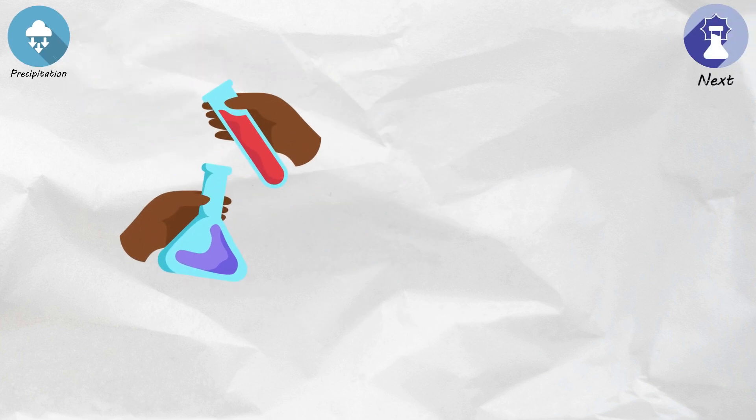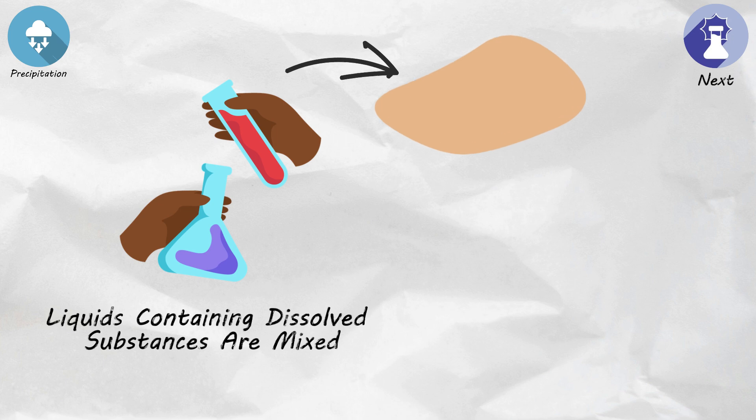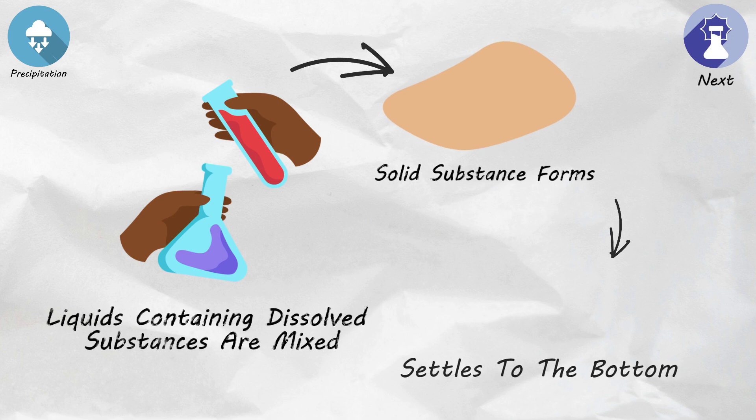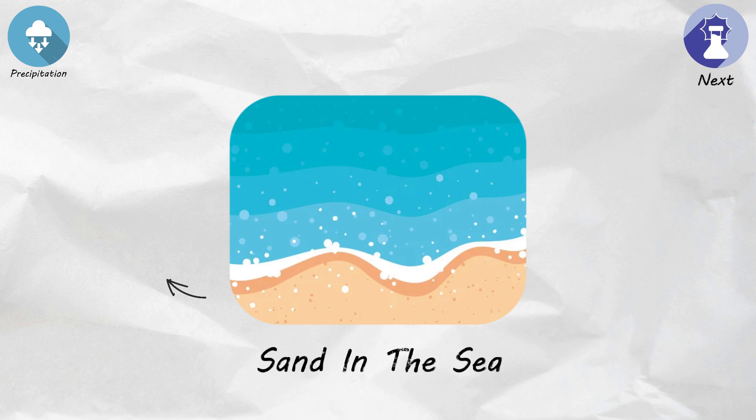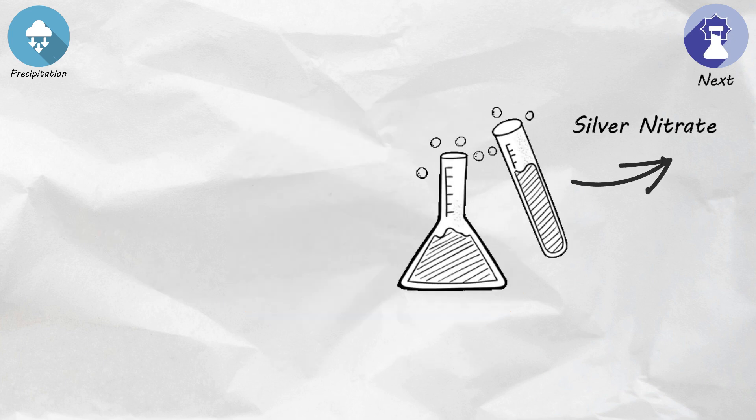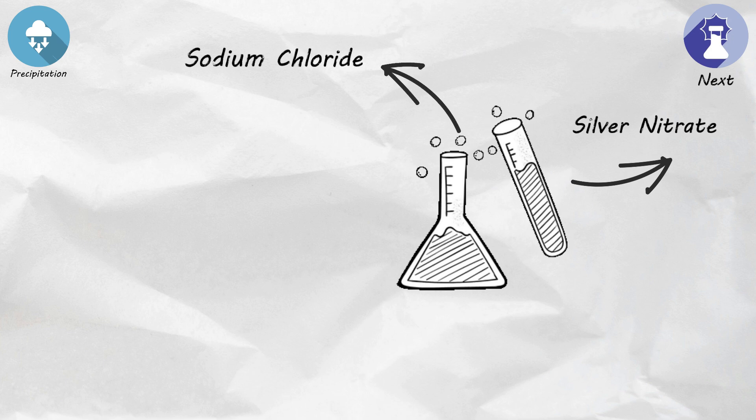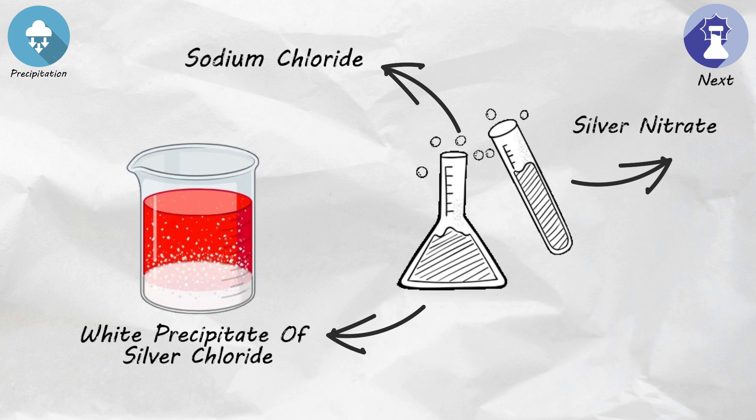Precipitation. In chemistry, when two liquids containing dissolved substances are mixed, sometimes a solid substance forms and settles to the bottom, just like the sand in the sea. This solid is called a precipitate. For example, when you mix solutions of silver nitrate and sodium chloride, they react to form a white precipitate of silver chloride.